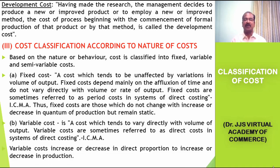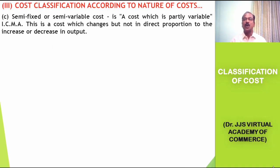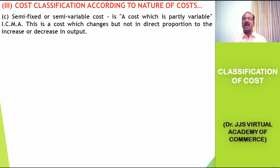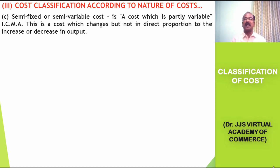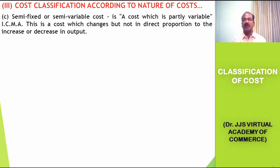Semi-variable cost varies partially. It is partially variable, or we could say it is partially fixed. It doesn't vary proportionately according to the volume of production. A portion of this particular cost remains unchanged with changes in volume of production, whereas the remaining portion will vary proportionately. But in total, this cost doesn't vary proportionately like variable cost, and that is why it is named semi-variable cost.